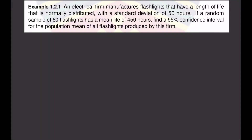In this video we are going to compute the confidence interval for the population mean using the z distribution. An electrical firm manufactures flashlights that have a length of life that is normally distributed with a standard deviation of 50 hours. If a random sample of 60 flashlights has a mean life of 450 hours, find a 95% confidence interval for the population mean of all flashlights produced by this firm.